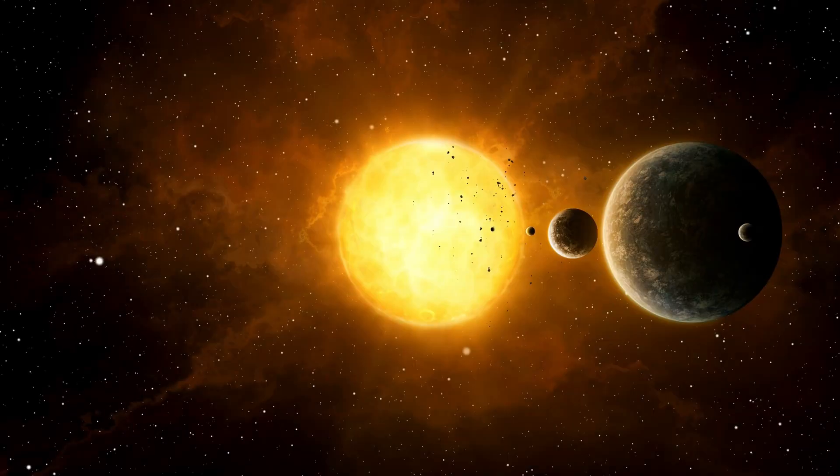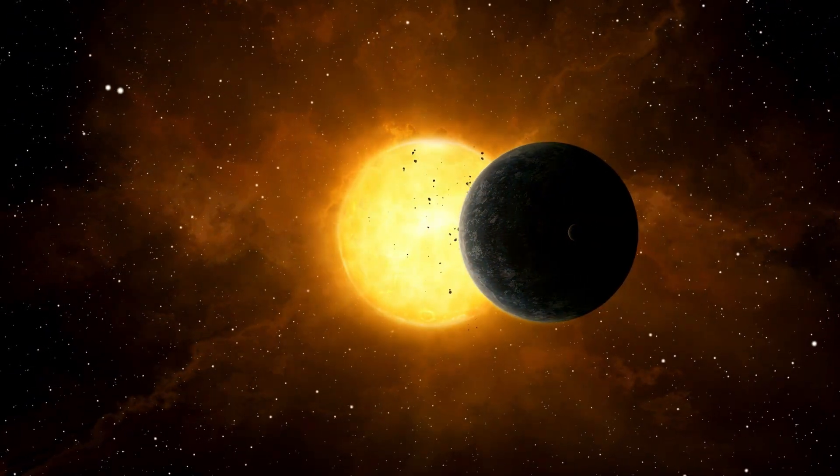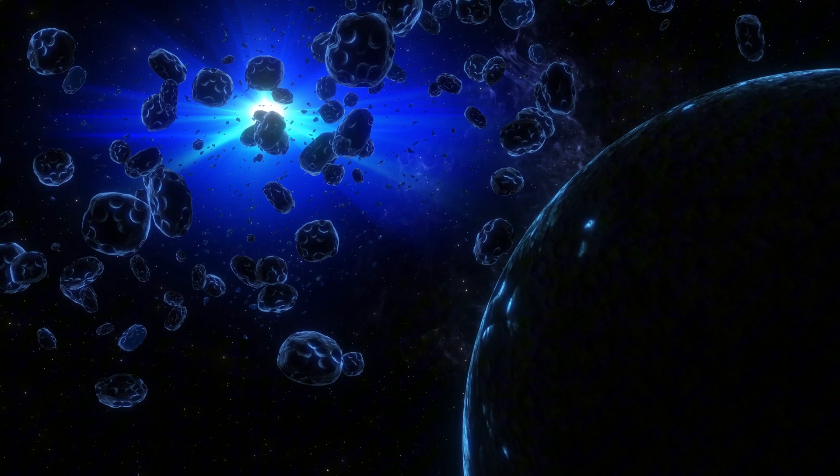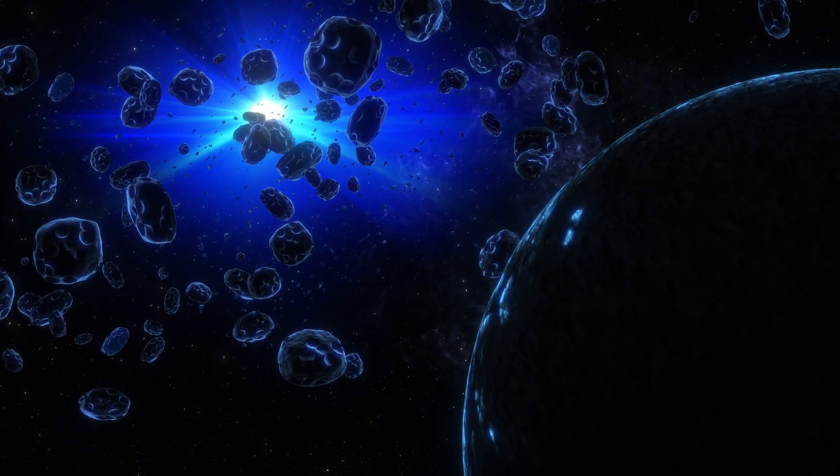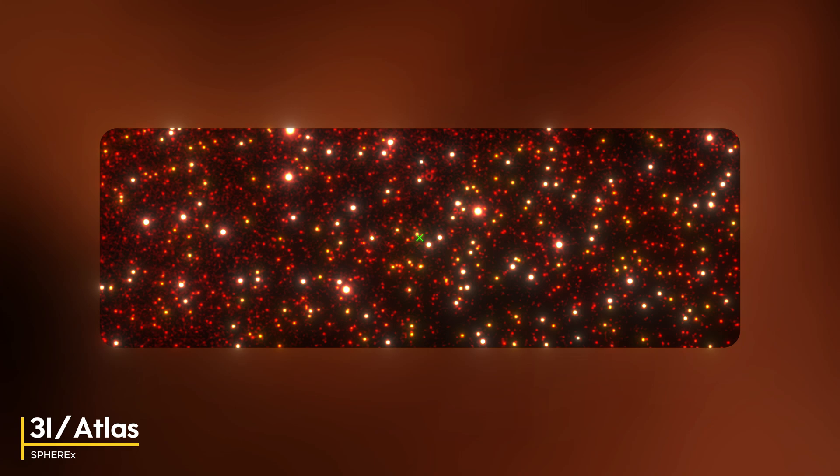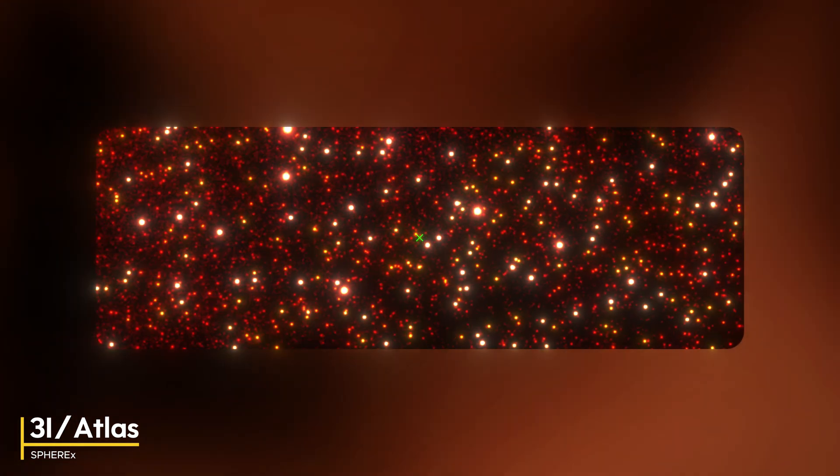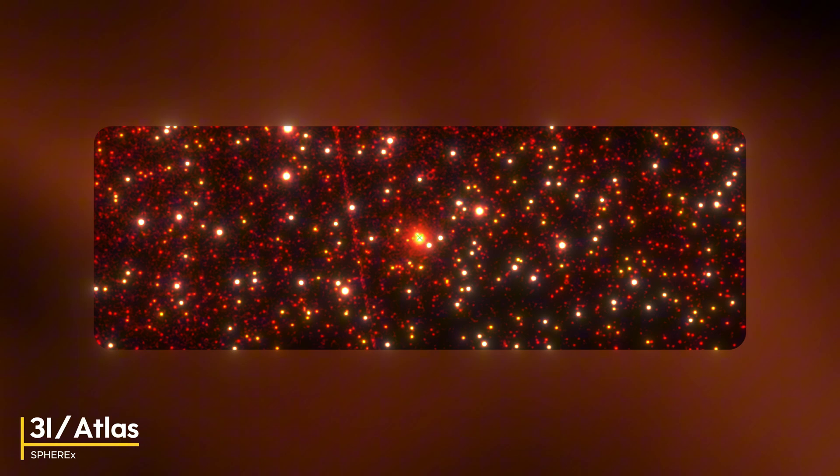3I Atlas breaks every rule in the comet playbook. First, it started getting bright when it was still way beyond Jupiter's orbit. That's like a snowball starting to melt in your freezer. Normal comets don't begin sublimating until they pass through Jupiter's orbit and start approaching the asteroid belt. But Atlas was already super bright and getting brighter every day when it was still on the far side of Jupiter.